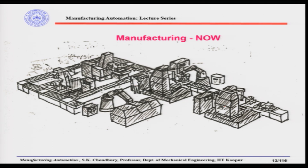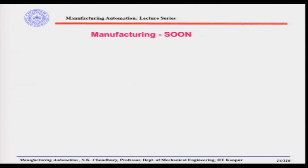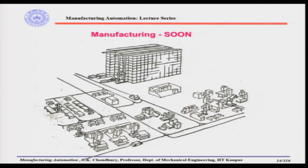In today's manufacturing, those few people are not operators — they are managers and highly skilled individuals observing whether the manufacturing or assembly process is carried out properly. The dream of 'manufacturing soon' is a fully automated production with no persons involved: automated machines, automated flow lines, automatic storage systems, and AGVs (automatic guided vehicles) acting as the material handling system.